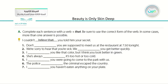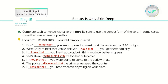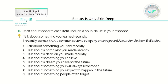After that, we had some exercises. We started with exercise A: complete each sentence with a verb plus 'that,' and be sure to use the correct form of the verb. In some cases, more than one answer is possible, and the answers are shown in the slide. Then we moved to exercise B: read and respond to each item. You are asked to respond to every request, such as 'talk about something you saw' or 'talk about a complaint you made.' We learned we can start the sentence with a noun clause, or it can come after the verb or after the adjective.